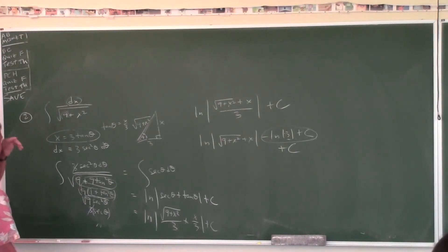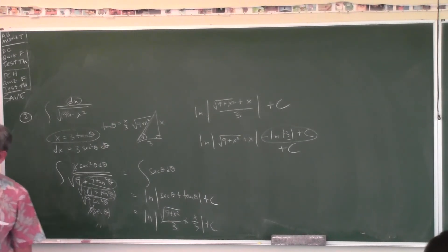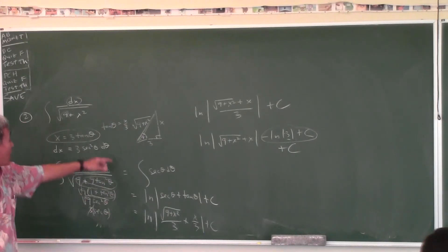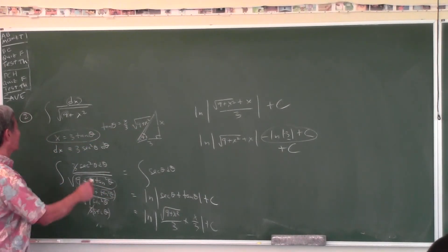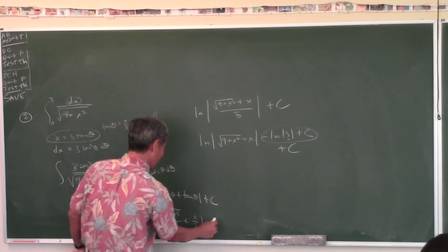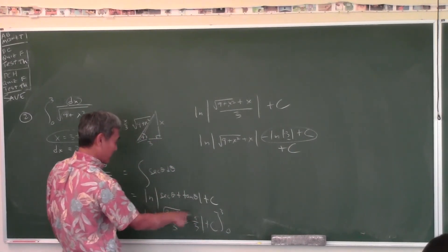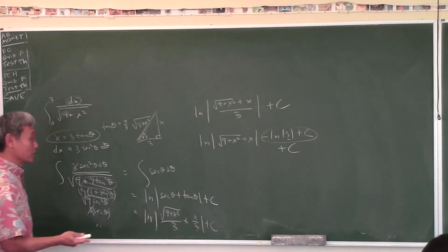So if there are no limits, the answer is in terms of X using the triangle. If there are limits, change the limits to θ-values and plug them in. Both approaches work — one gives the area directly, the other gives an expression in X plus C.